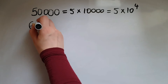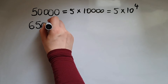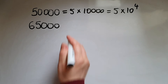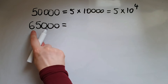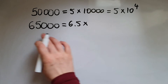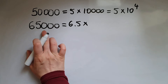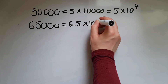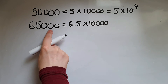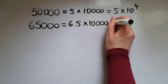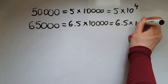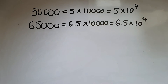Let's try another one. If we have 65,000, we're going to write that as 6.5 times 10,000. There are 4 digits after the leading digit, so this becomes 6.5 times 10 to the power of 4.